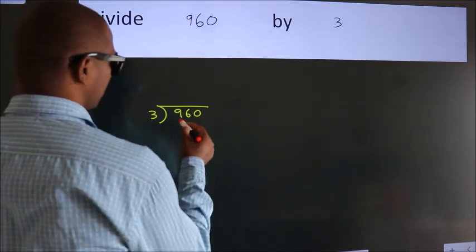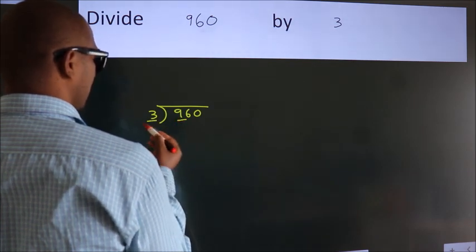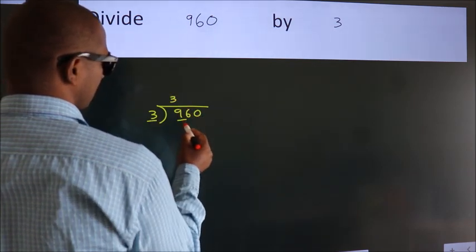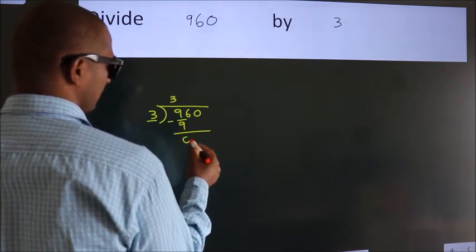Here we have 9. Here 3. When do we get 9? In 3 table. 3 3s, 9. Now we should subtract. We get 0.